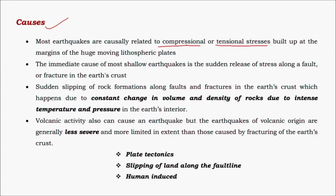There is constant change in volume and density of rocks below the earth's crust due to varying temperatures. As a result, change in density below the crustal plates can lead to subduction of regions in the earth's crust, which also leads to earthquakes. Based on different causes, earthquakes can happen due to plate tectonics, sliding of land along a fault line, or human-induced activity.